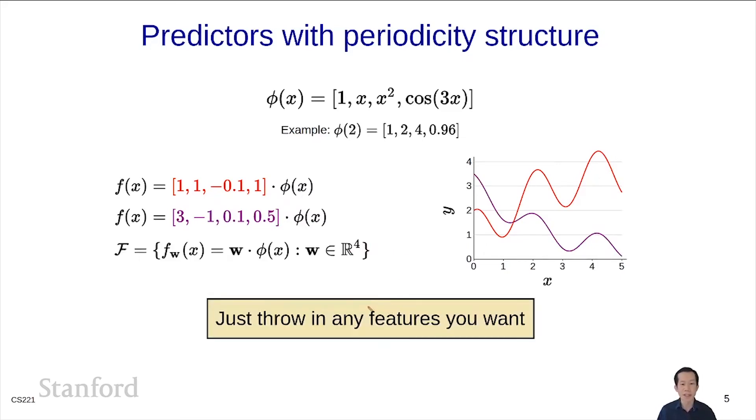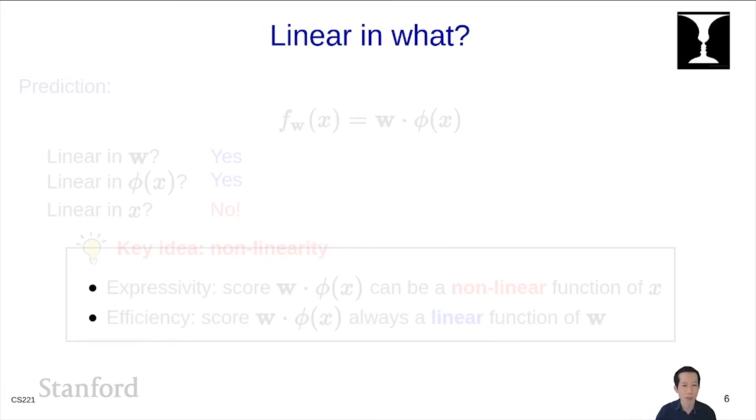The key idea is that you can really go wild. You can throw in any sort of features you want, and get all sorts of wacky looking predictors, all using the machinery of linear predictors. So you might say, wait a minute, how are we able to do this? Get all these expressive nonlinear capabilities when we haven't really changed the learning algorithm, or it's still supposed to be a linear predictor, right? Well, that's because the word linear is a little bit ambiguous here.